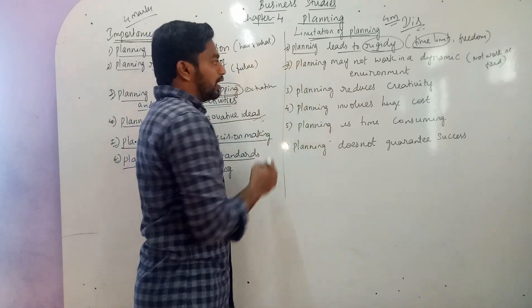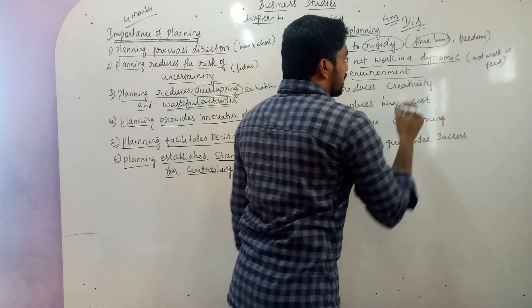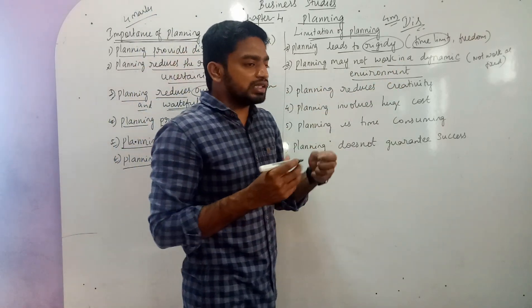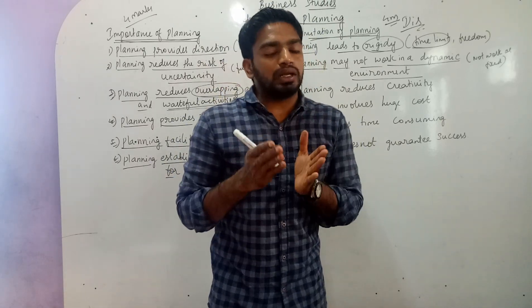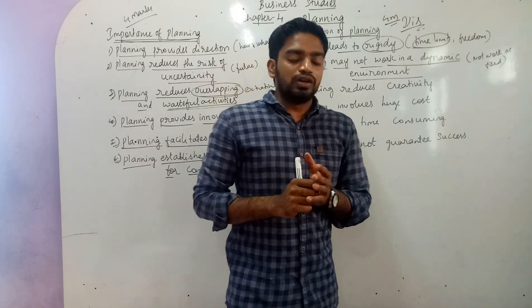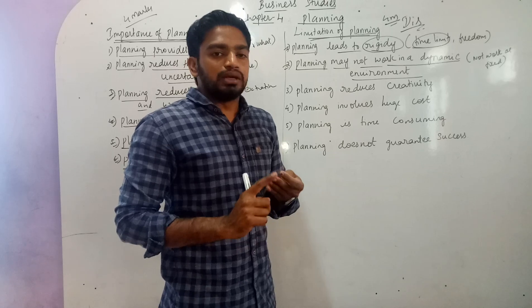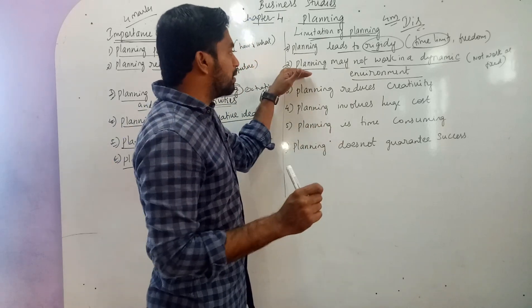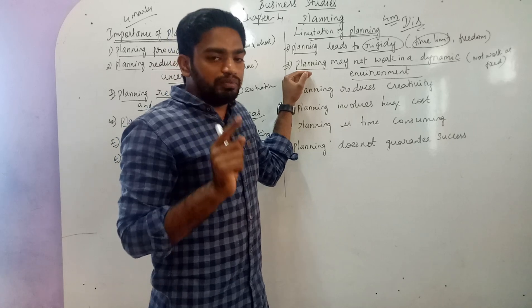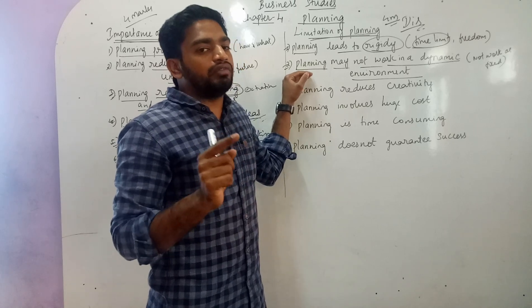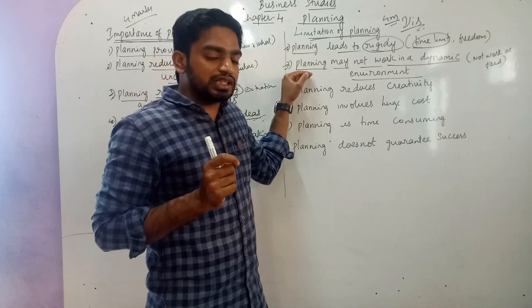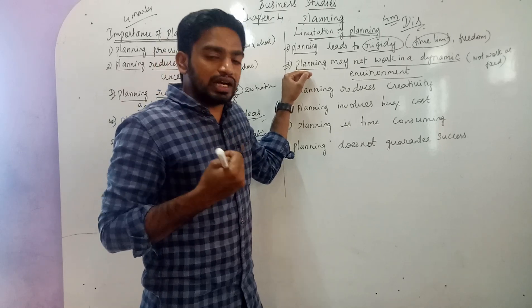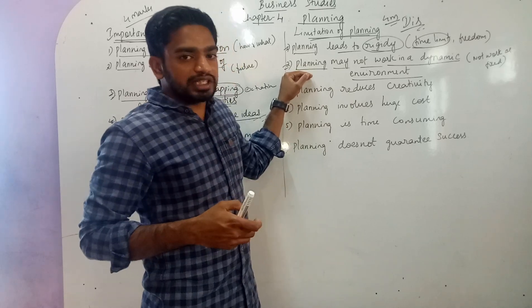Second limitation: planning may not work in a dynamic environment. Planning always changes because of political, social, religious, technological, and consumer-related factors. Whatever plan we have made may not work for a long period of time because it always changes due to political, social, religious, caste-related, and technological changes in the environment of the organization.